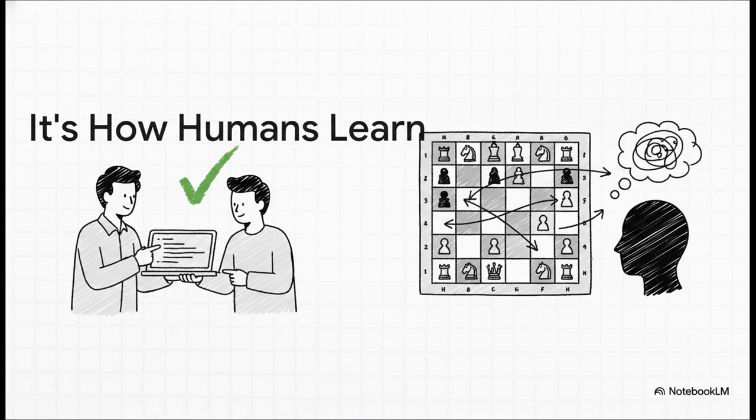And when you stop and think about it, this is exactly how we humans learn anything complex, isn't it? A new coder learns by getting feedback line by line. A chess grandmaster gets great by studying entire sequences and openings, not just by looking at the final checkmate. We learn because we reward progress along the way, not just the final win.